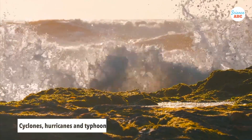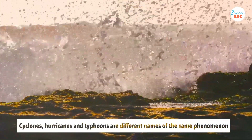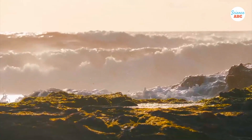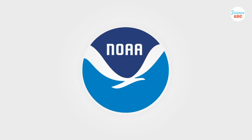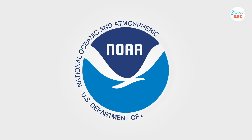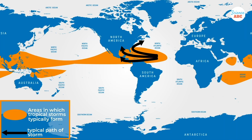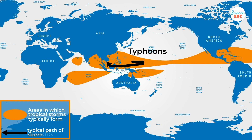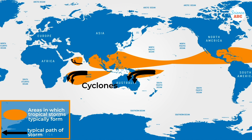Despite essentially being the same natural phenomenon, these storms are given different names based on the geographical region where they originate. According to the National Oceanic and Atmospheric Administration, NOAA, hurricanes occur in the North Atlantic Ocean, the Northeast Pacific Ocean, or the South Pacific Ocean. That's why, in the United States, you will mostly hear the term hurricane. Typhoons, on the other hand, occur in the Northwest Pacific Ocean, while cyclones occur in the Southwest Pacific Ocean and most parts of the Indian Ocean.